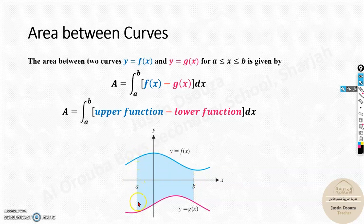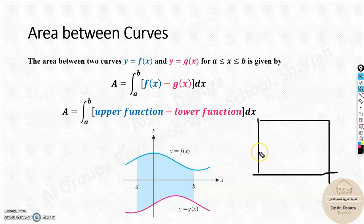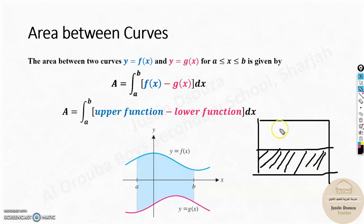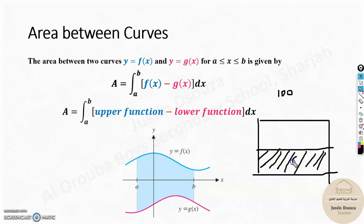and subtract the lower function, we get the area between them. Imagine you have a block — you know the shaded region area and you know the total area. To find the remaining area, you just subtract. Say the total is 100 and the shaded region is 60; then 100 minus 60 gives you 40. Similarly here, when you find the definite integral of the upper function, you get the entire area. When you subtract the lower function, you get the remaining area between the curves.